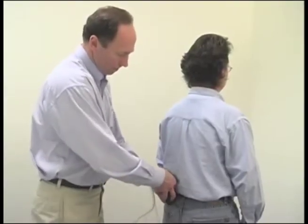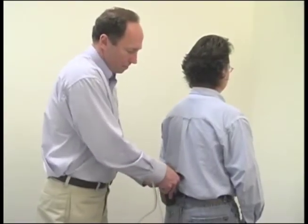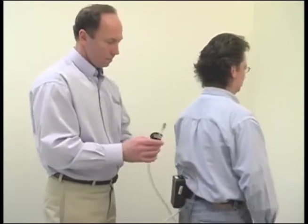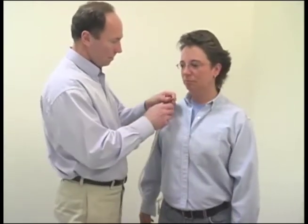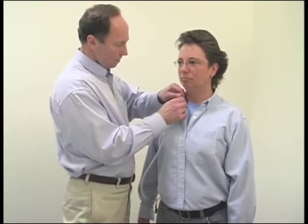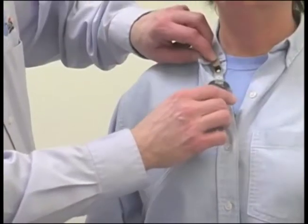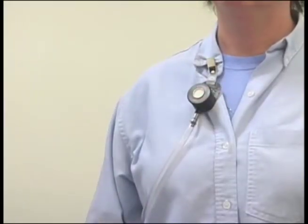Attach the pump to the worker's belt or pocket either in back or on the side. Bring the tubing to the front of the employee. Clip the IOM sampler onto the worker's clothing in the breathing zone. Remove the transport cover from the inlet of the IOM sampler.